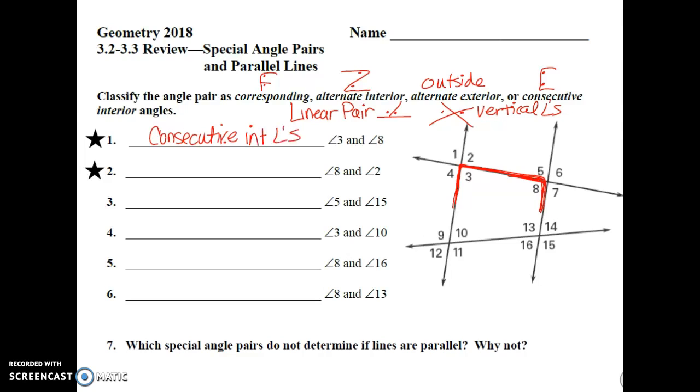We do question number two here. We have angles eight and two. Angle eight is right here. Angle two is up here. And if I trace those all the way out, you get that Z shape, a little above, a little below. That makes those alternate interior angles.